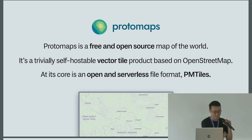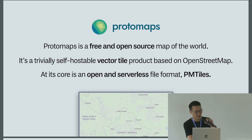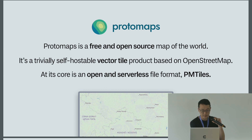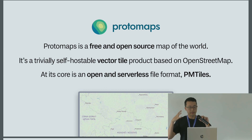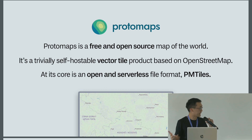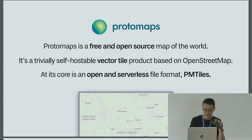What is Protomaps? It is a free and open source map of the world. Some of the unique things about this project are that it is a trivially self-hostable vector tile project based on OSM. It enables use cases like a vector base map that is customizable on the client for web mapping and for mobile mapping. At the core of Protomaps is an open and serverless file format called PMTiles.